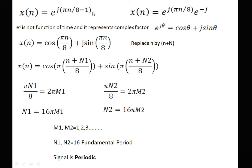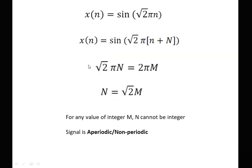Next: x(n) = e^(j(πn/8 − 1)). We expand as e^(jπn/8) × e^(−j). Note that e^(−j) does not depend on n — it is a complex constant (a scaling factor), not a time-varying term. So for periodicity, we consider only e^(jπn/8). Solving πN/8 = 2πm gives N = 16m, so both parts have fundamental period 16, and the final signal is periodic in nature.